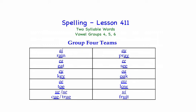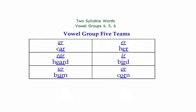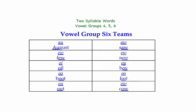Vowel group 4 is when two vowels come together, form a team, and the first vowel represents its long sound. These are the vowel group 4 teams listed on the screen. Vowel group 5 is when a vowel plus R join together and form a team, and these are our six vowel group 5 teams. Vowel group 6 is when two vowels join together and form a team, and the first vowel in each of these teams does not represent its long sound.